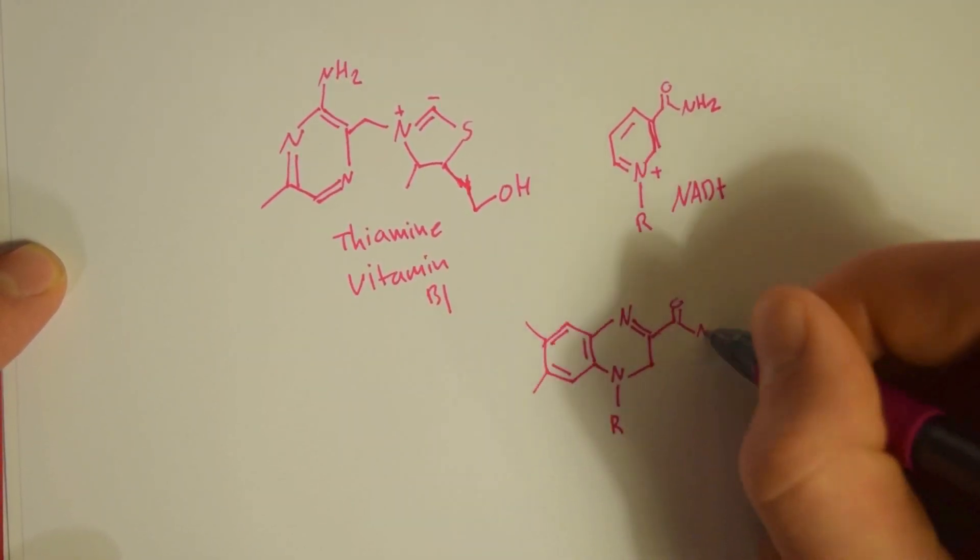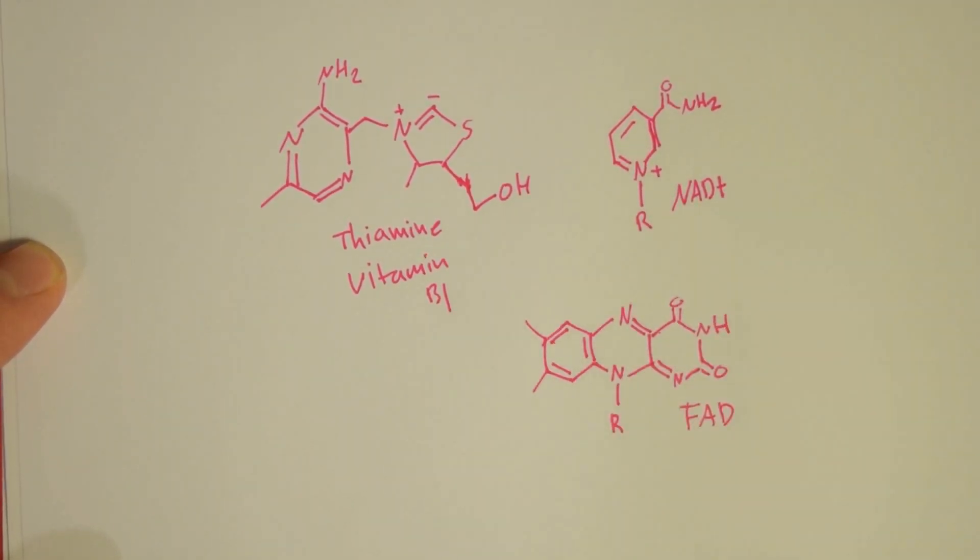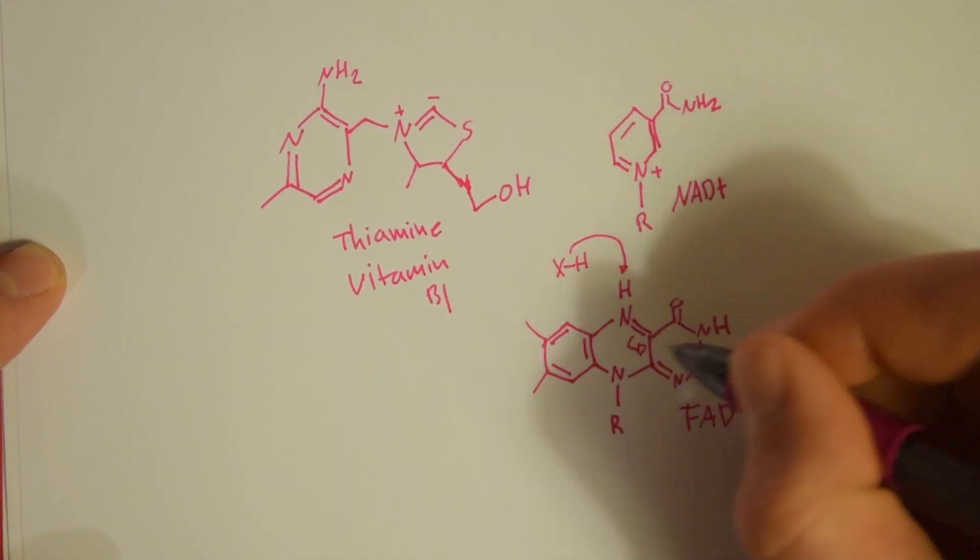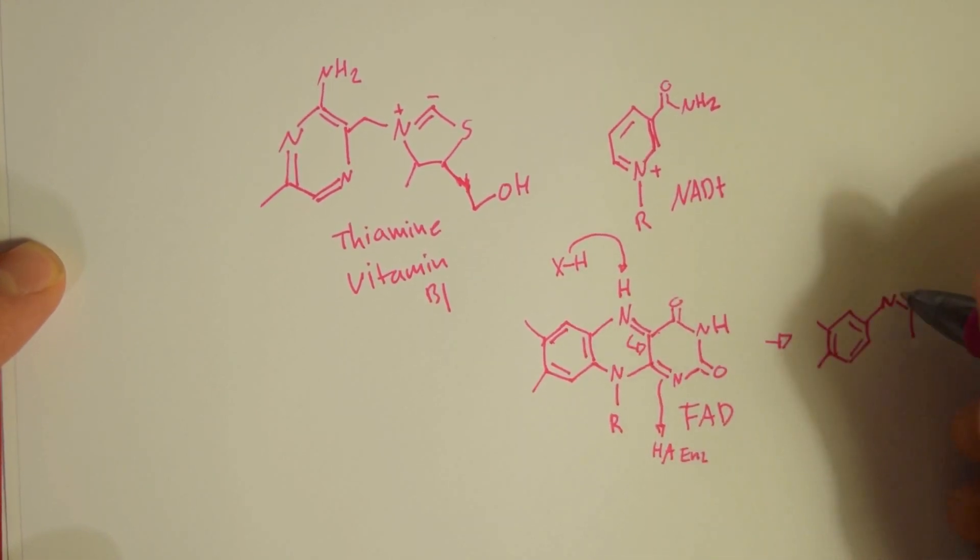The first one is thiamine, which is vitamin B1. Next one is NAD+, and the next one is FAD. And there's the quick mechanism about how it is protonated and turns into FADH2.